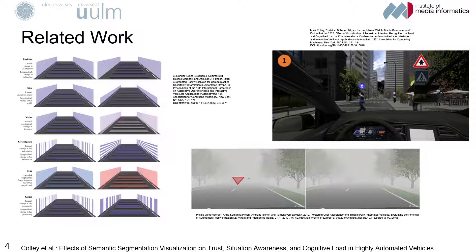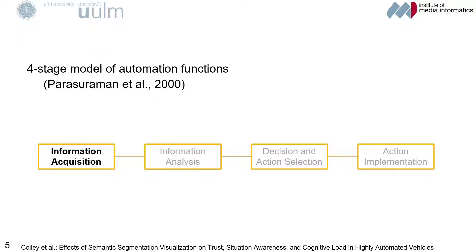Prior work investigated the highlighting of other vehicles or pedestrians and their intentions. With regards to conveying uncertainty, Kunze et al. especially investigated a set of visual variables to show one's own trajectory. However, the own trajectory is only determined after a series of information processing steps, as shown in this model by Parasuraman et al. This can also be found in the functional architectures of automated vehicles.